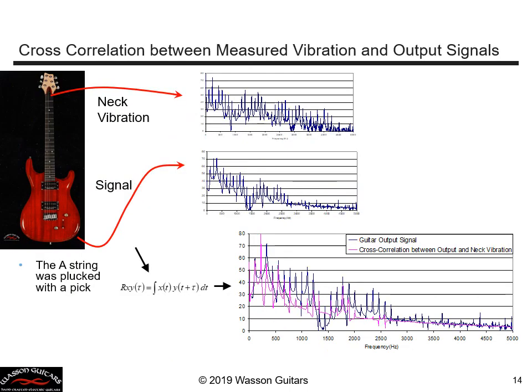We can apply this new cross-correlation tool to compare more complicated signals like the guitar output and the structural output from the accelerometer. On the bottom graph I plot the original output signal with the cross-correlation function, and we see that yes, there is strong correlation between the two signals at frequencies up to about three kilohertz — but not as well at frequencies where the guitar signal is weak. This cross-correlation function is just another tool in our toolbox to help us understand the relationship between the structural vibrations of the guitar and the output signal.